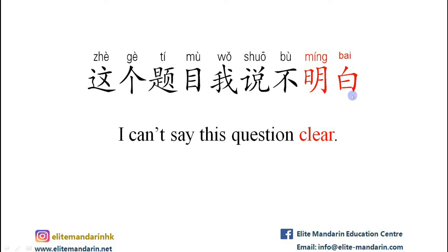这个题目我说不明白。 这 (this), 个 (measure word), 题目 (question), 我 (I), 说 (say), 不 (not), 明白 (clear). I can't explain this question clearly.